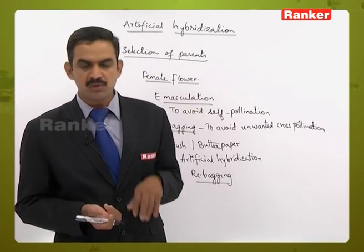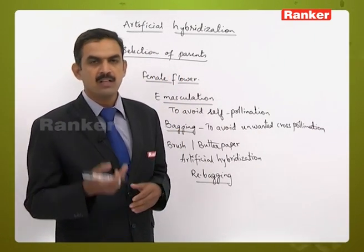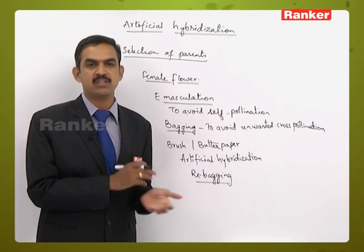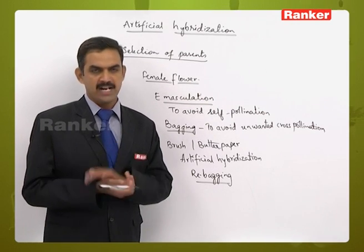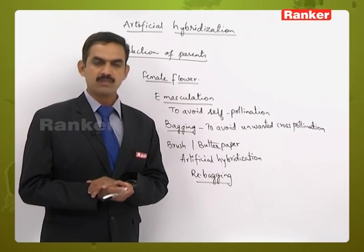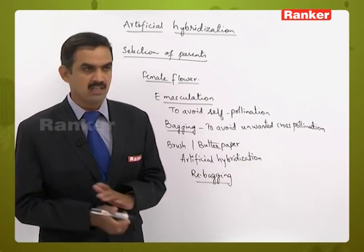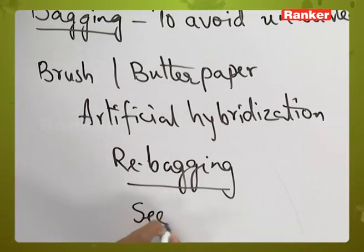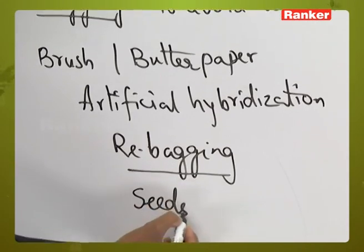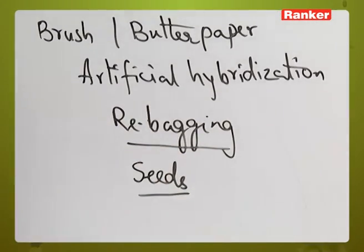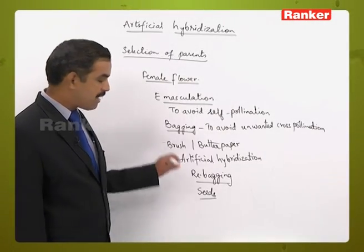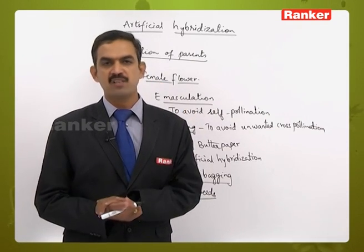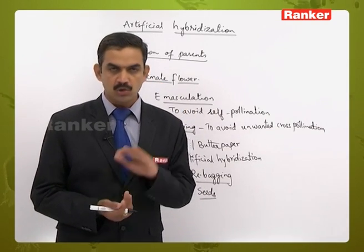After re-bagging, the pollen grains germinate on the stigma, producing a pollen tube. The male gametes fuse with the female gametes, leading to the formation of an embryo and endosperm. The ovules are then converted into seeds, which are called hybrid seeds.